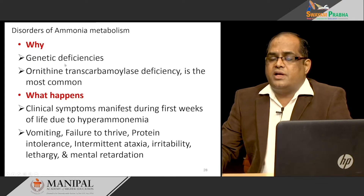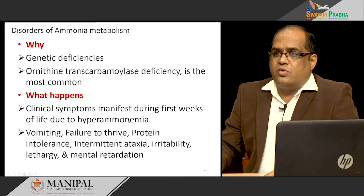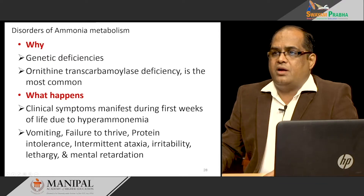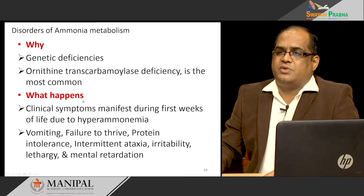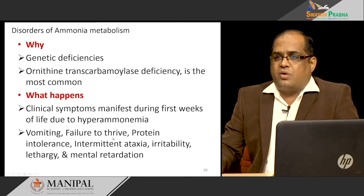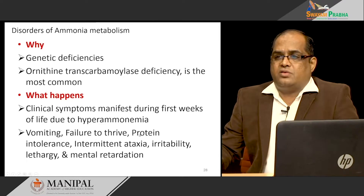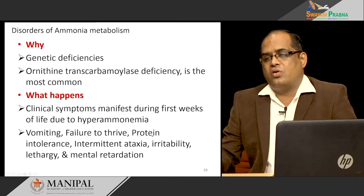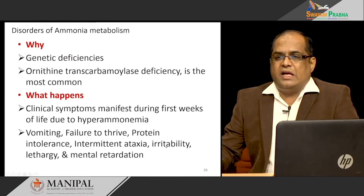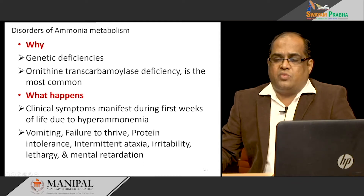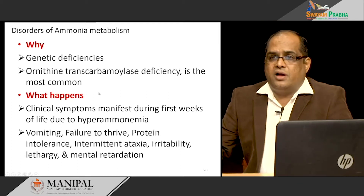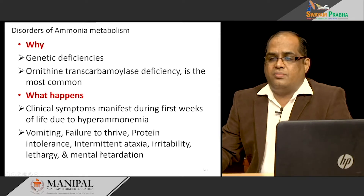These genetic disorders typically occur early in life in the newborn, causing increased ammonia levels in the blood — hyperammonemia. In the first few weeks of life, signs and symptoms will be observed. The babies will suffer from vomiting, failure to thrive, and protein intolerance, because a protein-rich diet leads to more amino acid load, more amino acid catabolism, and more ammonia to be detoxified. It causes intermittent ataxia, irritability, lethargy, and mental retardation, and if not treated, coma and death. That is why these disorders are very important to diagnose early in life.